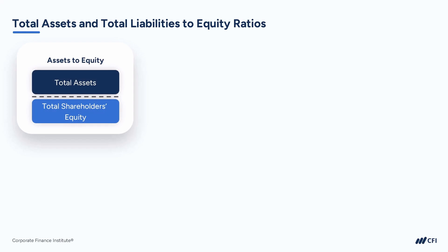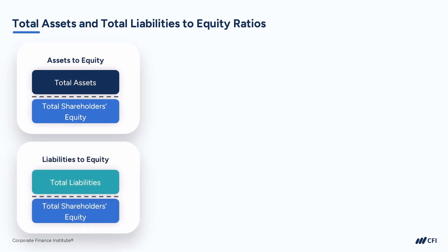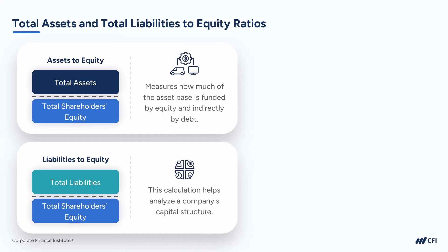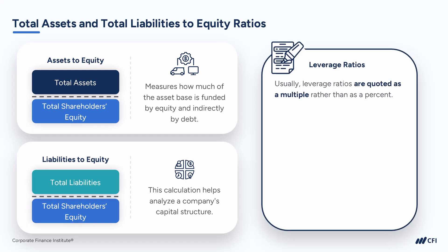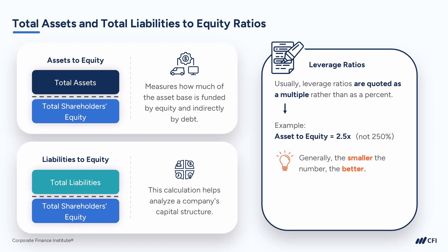There are several different ways that we can measure leverage. Here we see two ways: comparing total assets to equity, and comparing total liabilities to equity. Typically, all leverage ratios are quoted as a multiple rather than as a percentage. So if the total asset to equity ratio comes out to 2.5, we would say the ratio is 2.5 times — marked by an X — equity. We don't say debt is 250% of equity. Generally, the smaller the number the better, because as an analyst we want to make sure a business hasn't taken on too much debt. But a company can have too little debt as well. It's useful to know what the industry standards are first before evaluating this ratio.